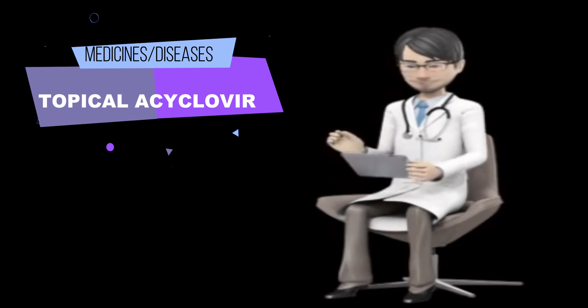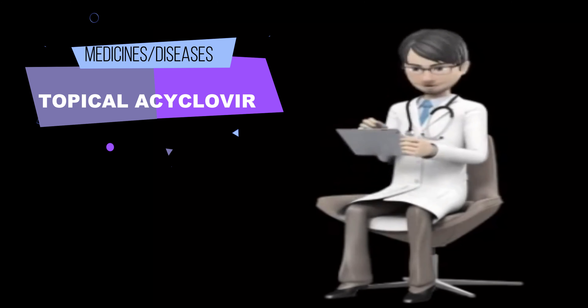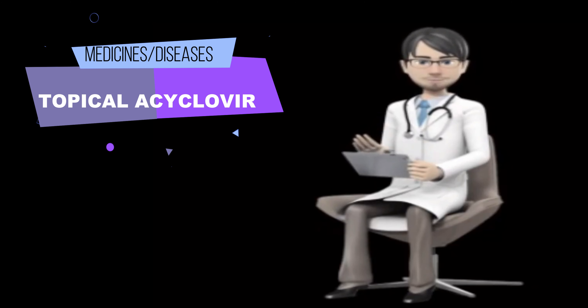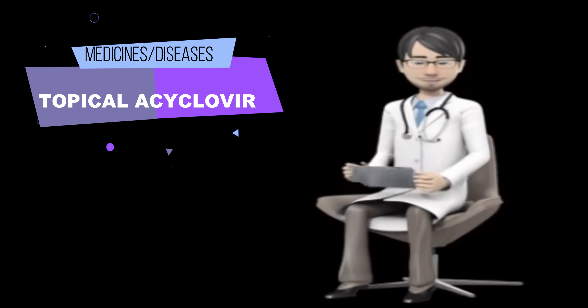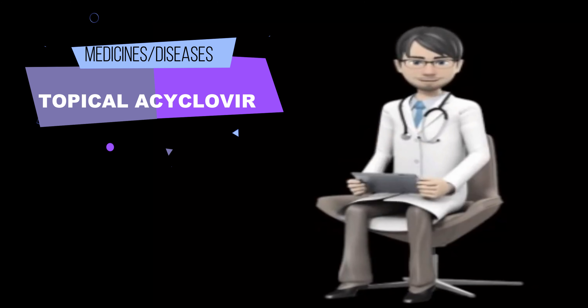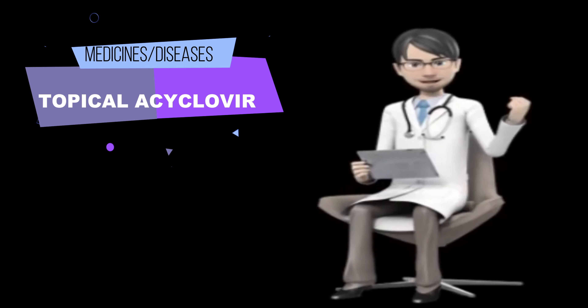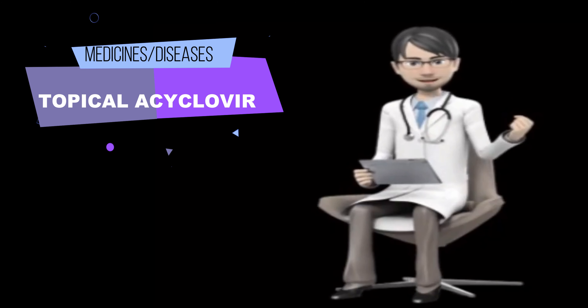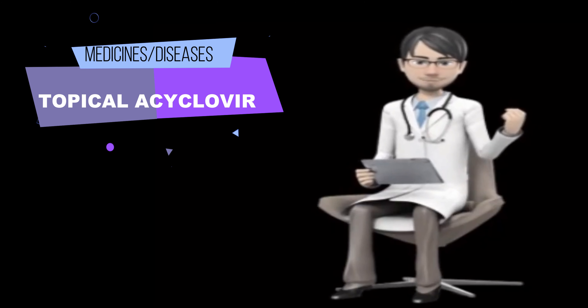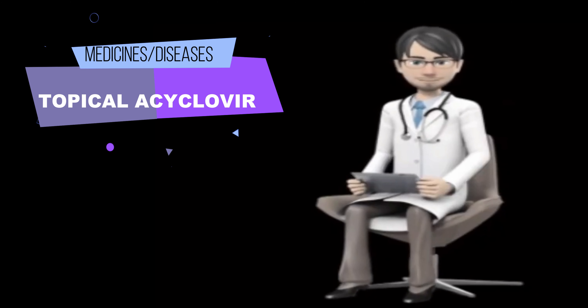Acyclovir ointment is usually applied 6 times a day, usually 3 hours apart, for 7 days. It is best to begin using acyclovir ointment as soon as possible after you experience the first symptoms of infection.